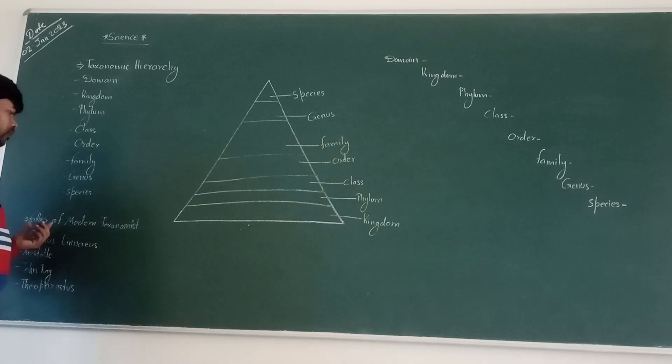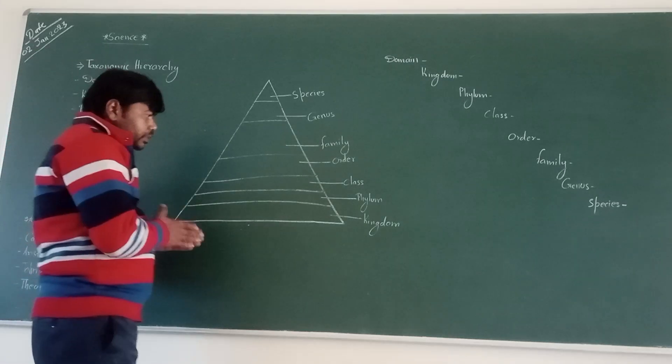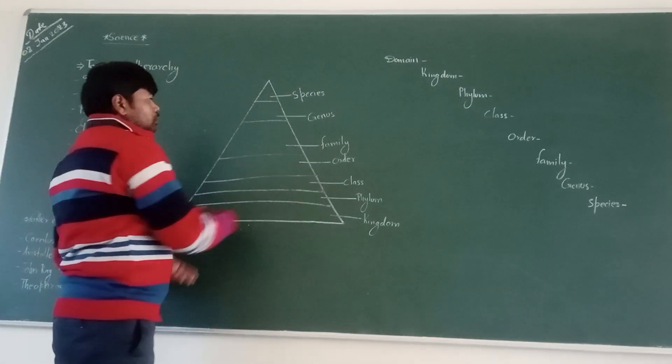We know that father of modern botanical taxonomy, which are also known as Carolus Linnaeus, and other scientists which are related to modern taxonomy like Aristotle, John Ray, and Theophrastus. These are some scientists which are related to taxonomy and today we are learning about taxonomy.